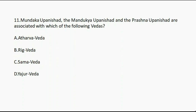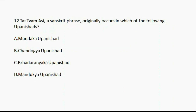Question number eleven: Mundaka Upanishad, Mandukya Upanishad, and Prashna Upanishad are associated with which of the following Vedas? Option A: Atharva Veda. Option B: Rig Veda. Option C: Sam Veda. Option D: Yajurveda. And the correct answer is option A, Atharva Veda.